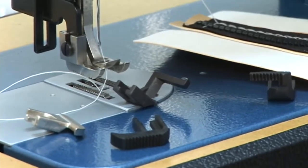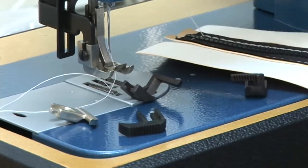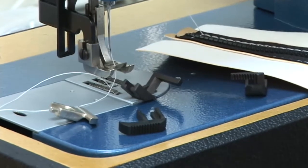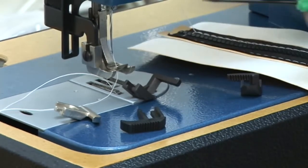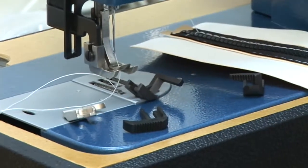Now the reason that you would want to do this would be so that you could get closer to a hard object like a zipper tooth. We're going to show you how that works now by taking this machine and switching to the left zipper foot and then showing you stitching on the sample.